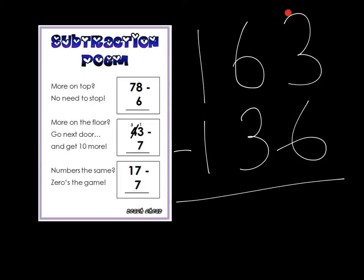Now, let's look at the units column. It says three take away six. Obviously, I know I can't do that one because six is larger than three. So I need to go to the next column or next door and take away a ten.